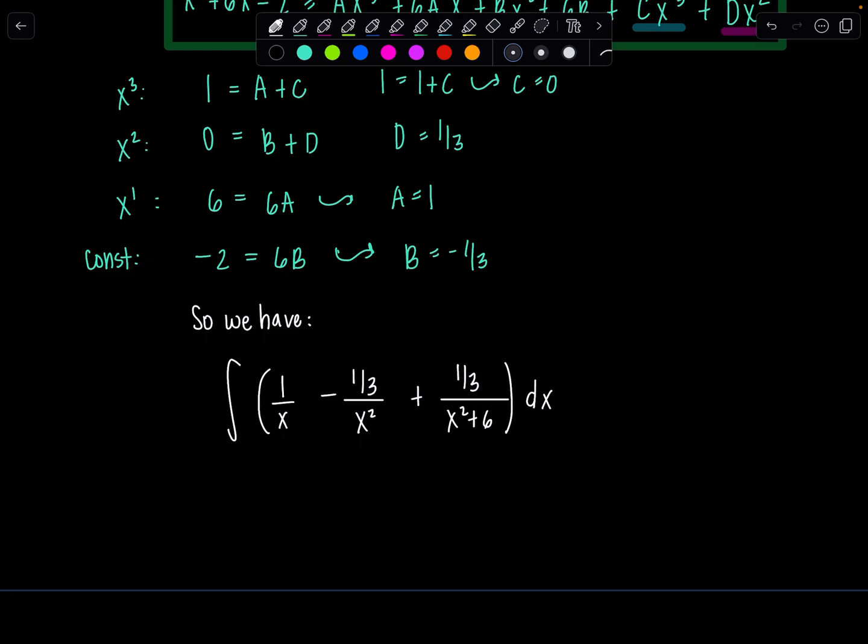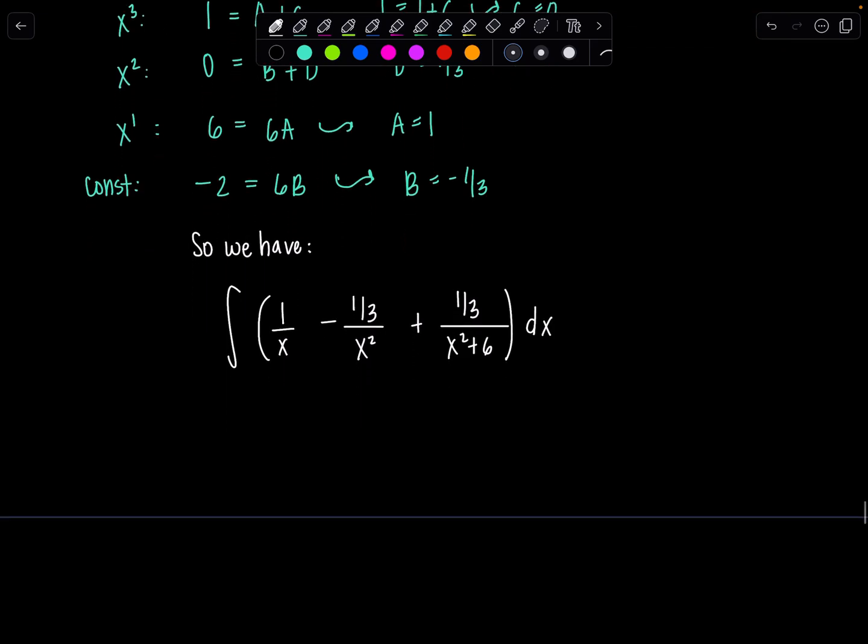So can we integrate each of these? 1 over x, you should know the antiderivative of that, no problem. What about one-third over x squared? I'm going to rewrite it as one-third x to the negative second, maybe that'll help you. You should be ready to go with this one. When we integrate, we're just going to add one to the exponent, divide by the new exponent.